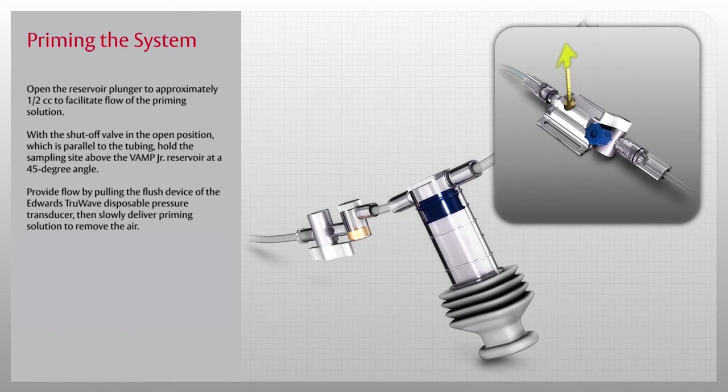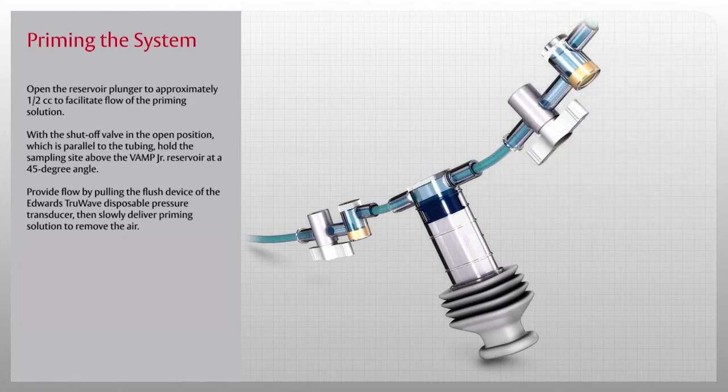Now, provide flow by pulling the flush device of the Edwards TrueWave disposable pressure transducer. Then slowly deliver priming solution to remove the air.